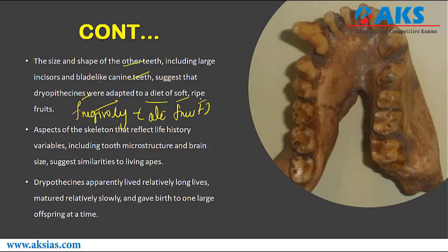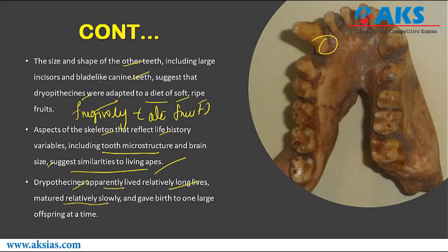Dryopithecus were frugivores, and the evidence from dental cavities indicates a high-sugar diet derived from ripe fruits and honey. Dryopithecus likely had a high carbohydrate and low fiber diet. Aspects of the skeleton, including tooth microstructure and brain size, suggest similarities to living apes. Dryopithecus apparently lived relatively long lives, matured slowly, and gave birth to one large offspring at a time. The estimated living weight of a male Dryopithecus was around 44 kg.